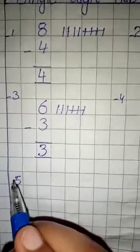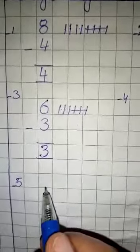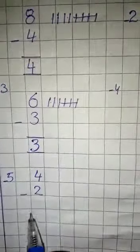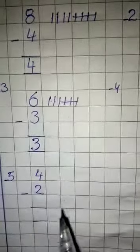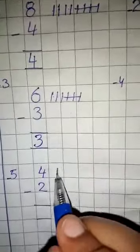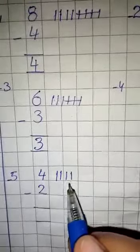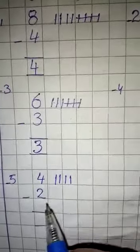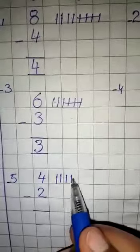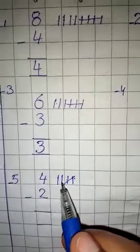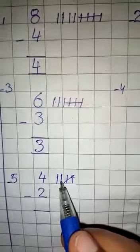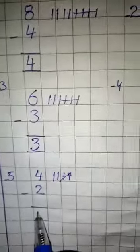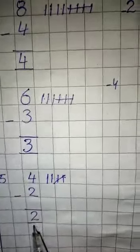Fifth question is 4 minus 2. First we draw 4 lines: 1, 2, 3, 4. Now how many lines we cut? 2 — 1, 2. Now we will count the remaining lines: 1, 2. We will write 2.